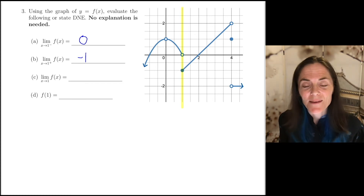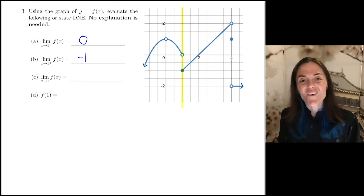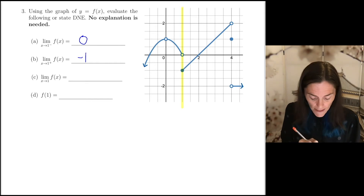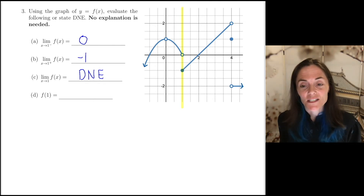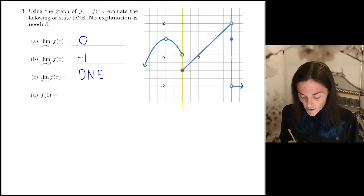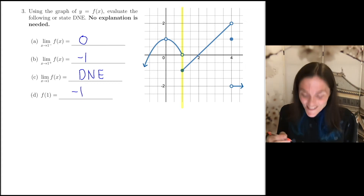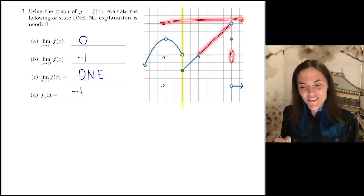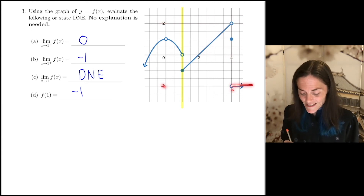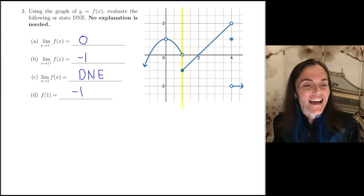Part c is the overall limit. The limit from the left is not equal to the limit from the right — one is 0 and one is negative 1 — so the overall limit does not exist. Finally, the function value: it is filled in at x equals 1, so the function value is exactly negative 1. You could also think about other x values — for instance, at x equals 4, the limits and function value differ, which is another good thing to consider as you prepare for the quiz.